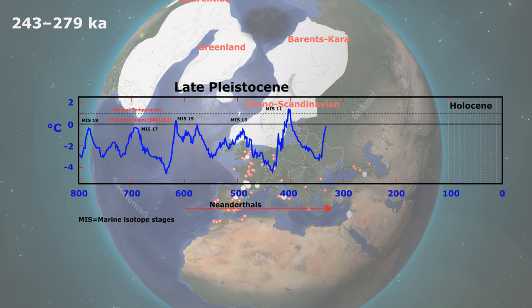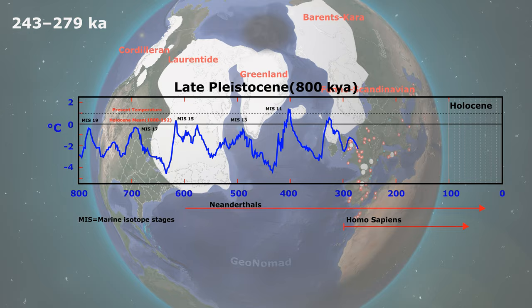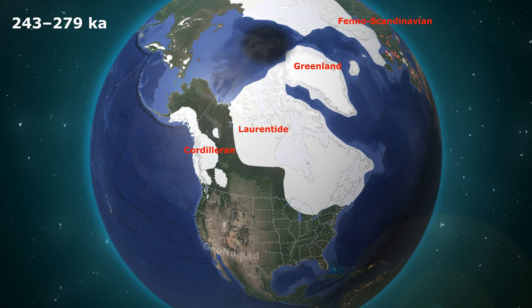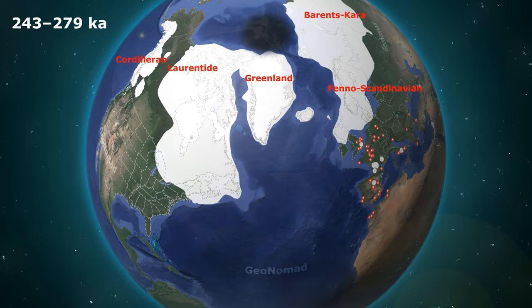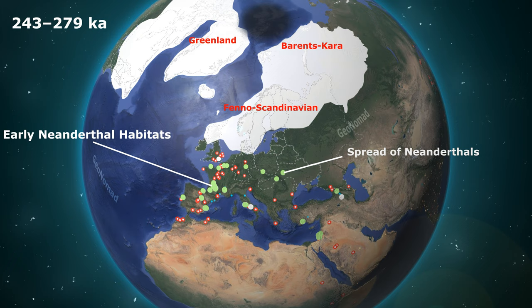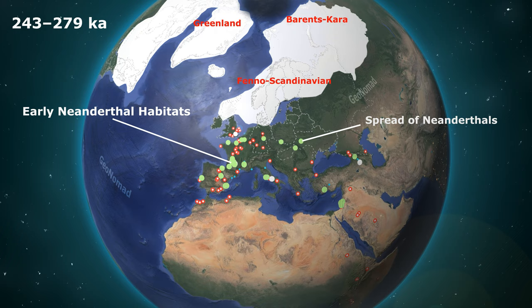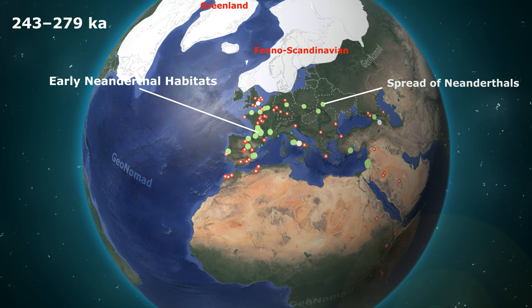279,000 years ago, the Earth started to cool again. The glacial period lasted until 243,000 years before the present, with a glacier size similar to previous ice ages. The Laurentide and Cordilleran ice sheets of North America were not interconnected. Neanderthal remains from this time suggest their habitats spread to the north and east. In Europe, Homo heidelbergensis, Homo erectus, and Neanderthals shared habitats, with Neanderthals showing superior intelligence and climate adaptation.